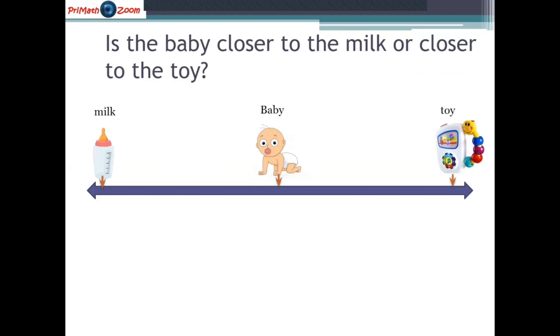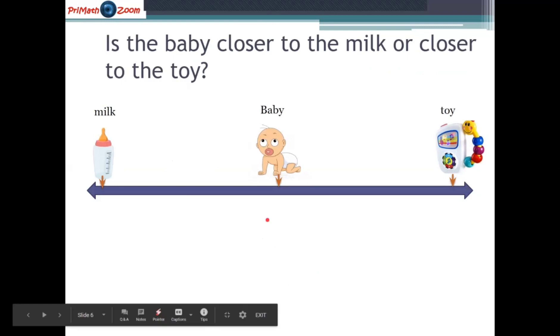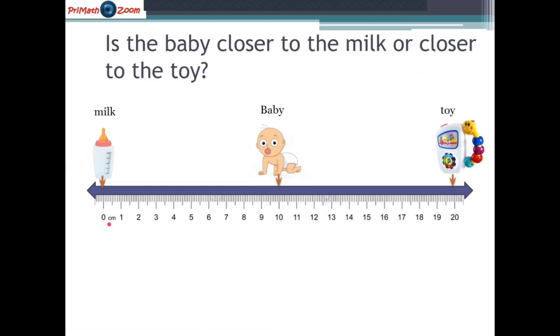Now, is this baby closer to the milk or closer to the toy? Let's think about it. Here we have a ruler and look here at the zero point is where we're going to start. So the milk bottle is placed at the zero point and the toy is placed at the last point at 20 points. Now the zero is a starting point and 20 is the ending points. And in order to know if the baby's closer to the milk or closer to the toy, we have to figure out which mark will represent halfway.